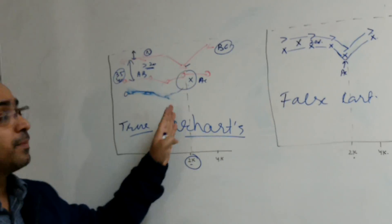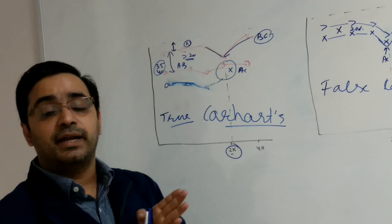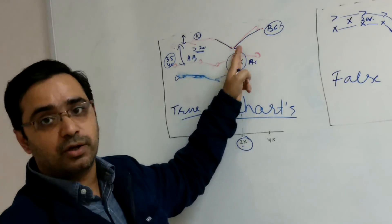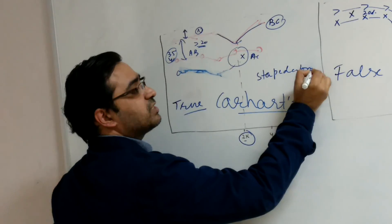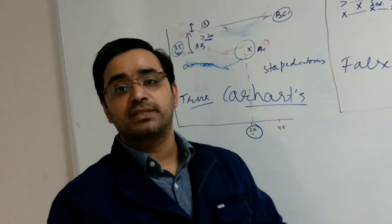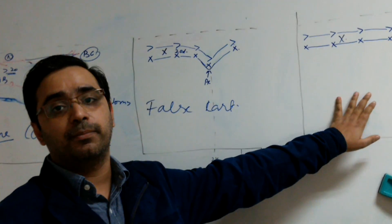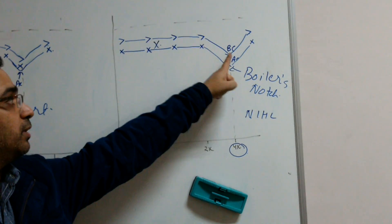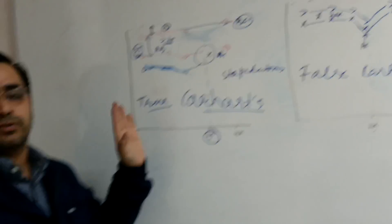Otosclerosis is a conductive hearing loss, but why is a dip shown in bone conduction? This is because some bone conduction does travel through the otosclerotic focus. The proof that this is not actual sensorineural hearing loss is that once we perform a stapedectomy for otosclerosis, this notch tends to disappear — showing it was not true sensorineural loss. To summarize: a 2 kHz notch with AB gap and notch only in bone conduction is Carhart's notch — otosclerosis or ossicular fixation. A 4 kHz notch in both bone and air conduction is boiler's notch — noise-induced hearing loss.